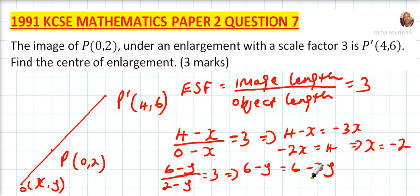Take y to the other side, it will be 2y equals 0. Divide both sides by 2, y equals 0.